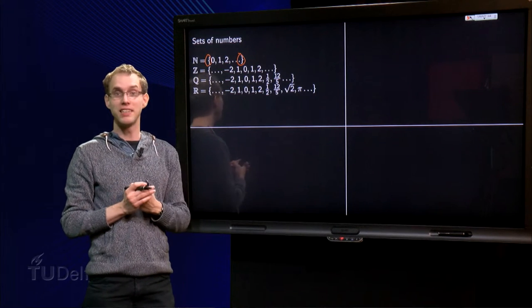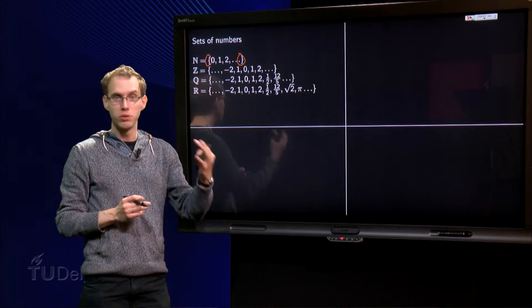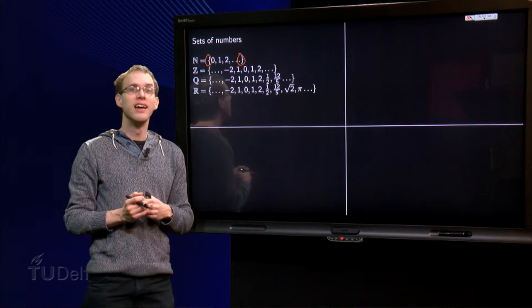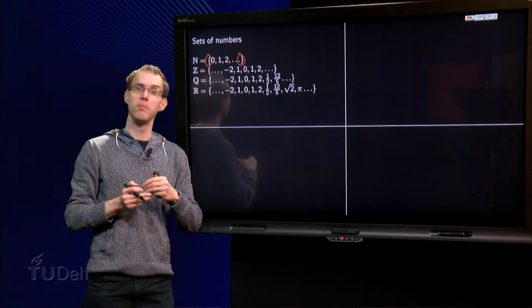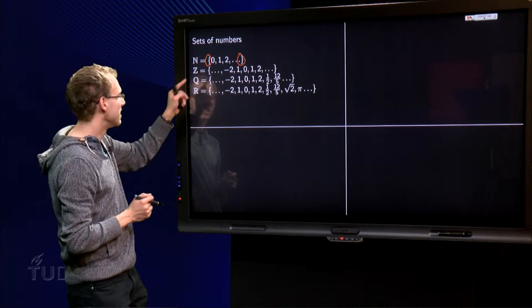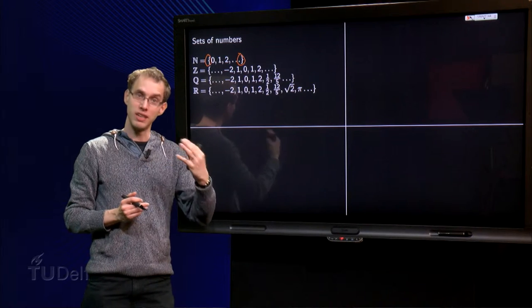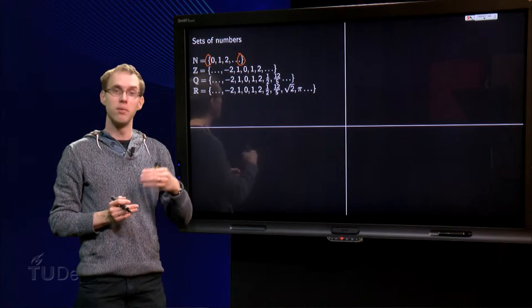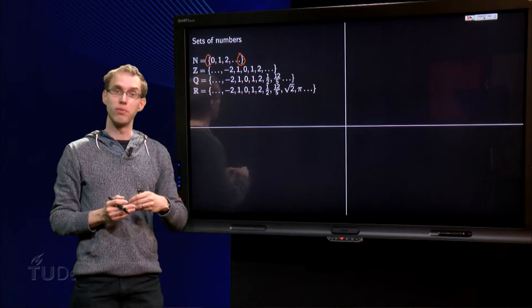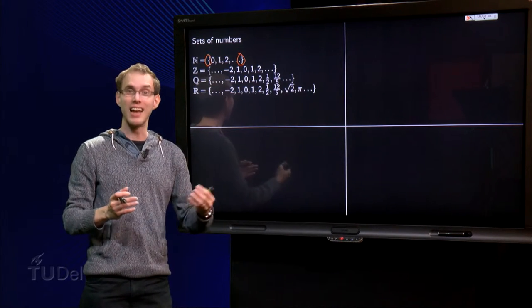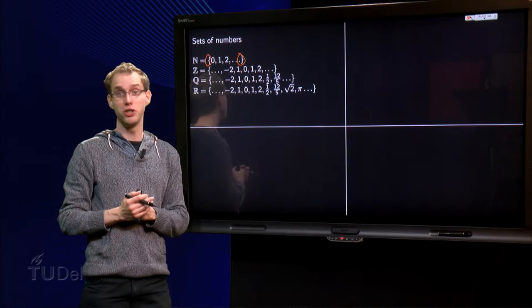Then you learned how to add them, 2 plus 3, you learned to subtract, 5 minus 3, and at a certain point you tried 3 minus 5, and that was a problem. So then you learned the set Z, which also contained the negative numbers, minus 1, minus 2, minus 3, etc. And the set comes from German and means Zahlen, which is numbers in German.